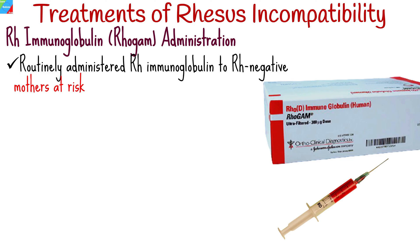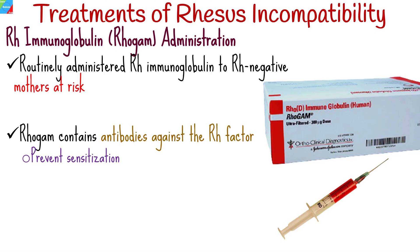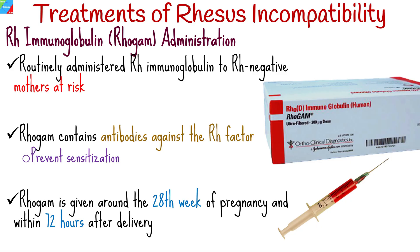Rh negative mothers who are at risk of Rh alloimmunization, such as during pregnancy, childbirth, miscarriage, or abortion, are routinely administered Rh immunoglobulin. Rh immunoglobulin contains antibodies against the Rh factor and works by binding to and neutralizing any Rh positive fetal red blood cells that may have entered the maternal bloodstream, thus preventing sensitization. It is typically given around the 28th week of pregnancy and within 72 hours after delivery or any other Rh incompatible event.